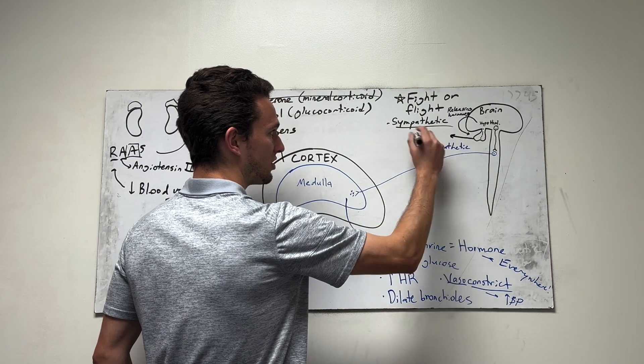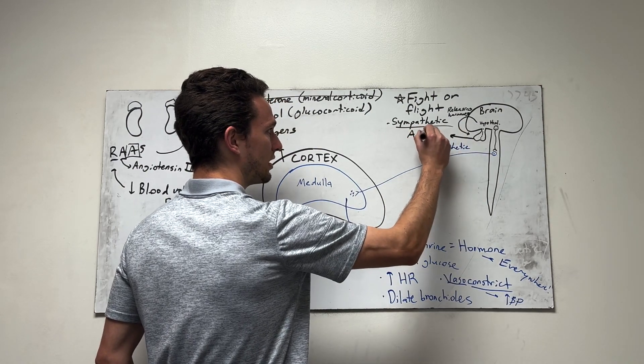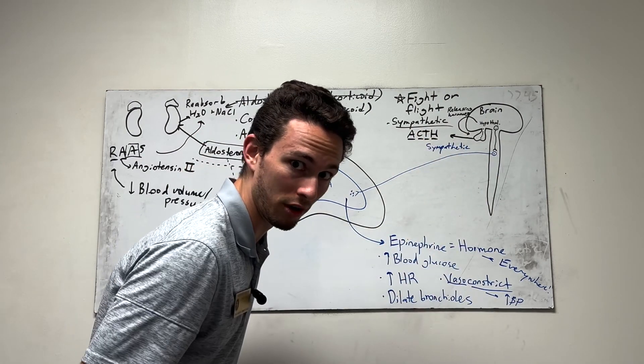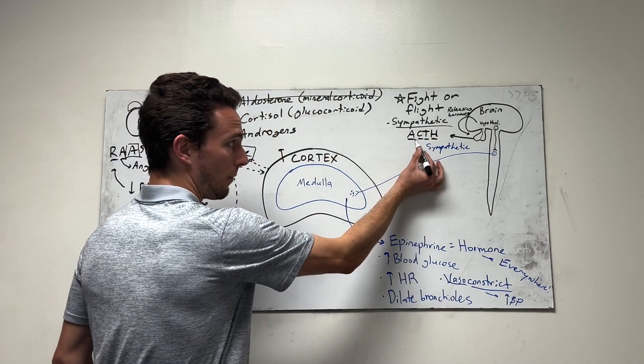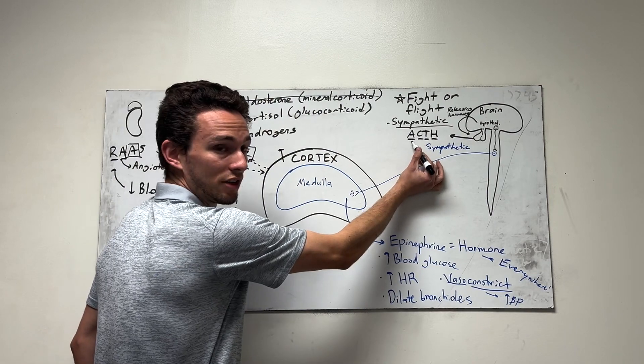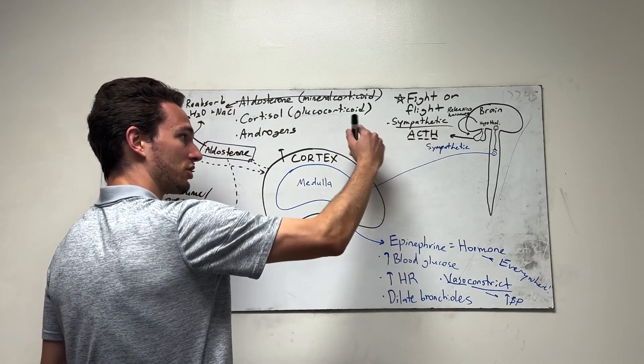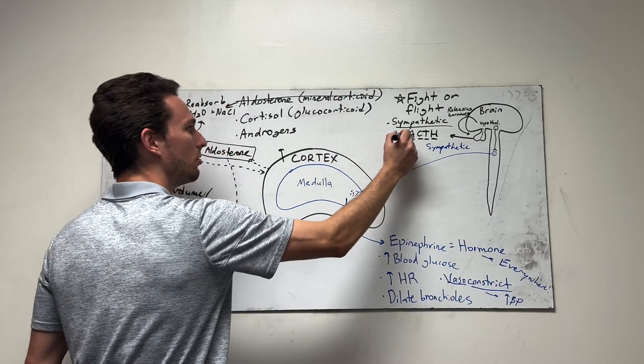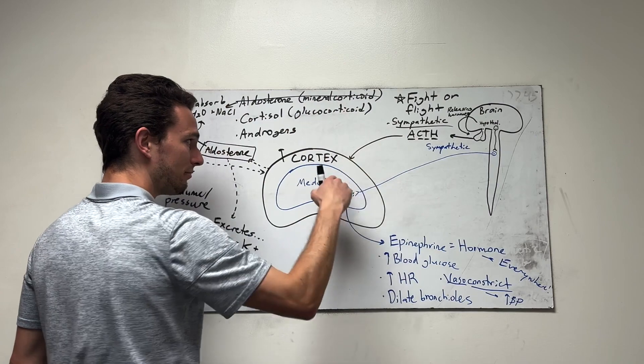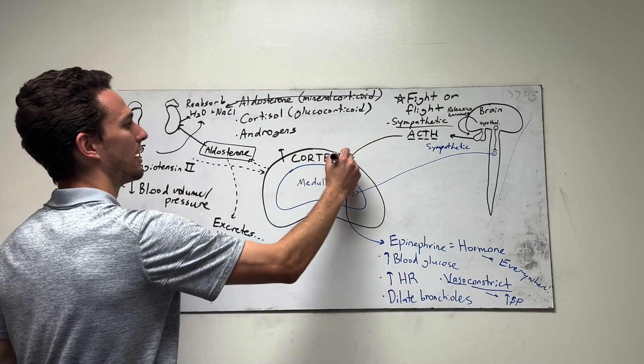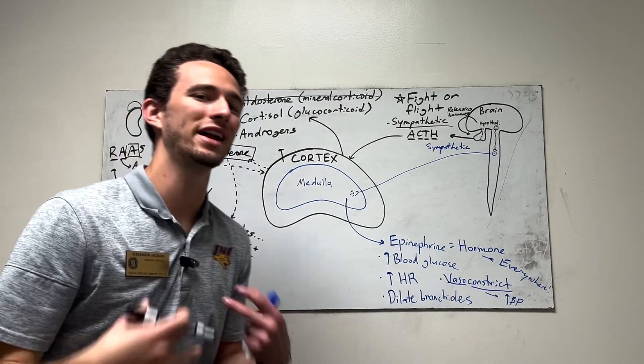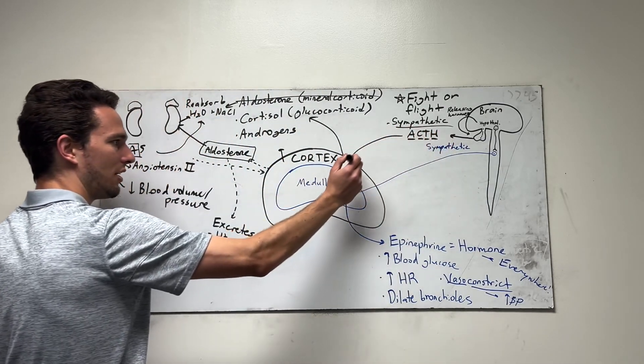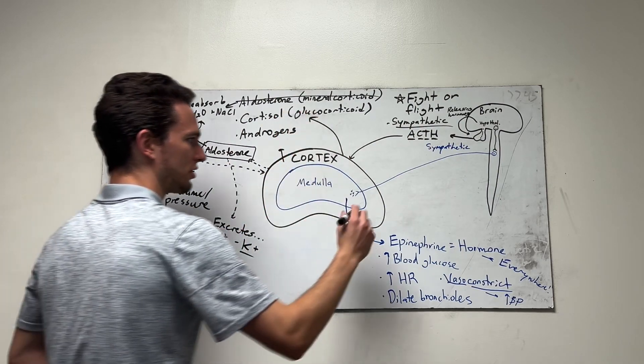That anterior pituitary gland will release something called ACTH. This is called adrenocorticotropic hormone. Big old word, adrenocortico. That means the cortex of the adrenal glands. Tropic means we're going to act on a structure to tell it to make its hormone. So adrenocorticotropic hormone travels to the adrenal cortex and tells the adrenal cortex to then release cortisol. So that's when it is released. So it's a hormonal control. So ACTH tells the adrenal cortex make cortisol.